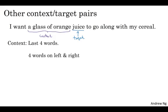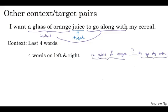And so if your goal is to learn an embedding, researchers have experimented with many different types of contexts. If your goal is to build a language model, then it's natural for the context to be a few words right before the target word. But if your goal isn't to learn the language model per se, then you can choose other contexts. For example, you can pose a learning problem where the context is the four words on the left and right. And what that means is that we're posing a learning problem where the algorithm is given four words on the left and four words on the right, and it's asked to predict the word in the middle.